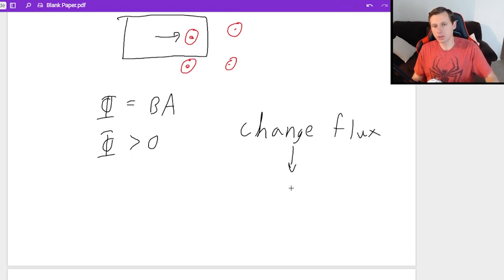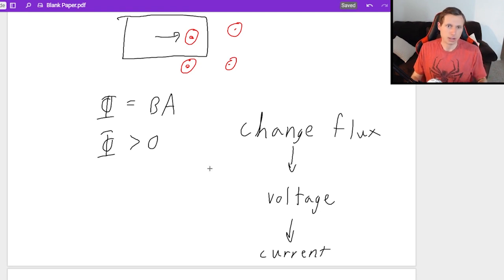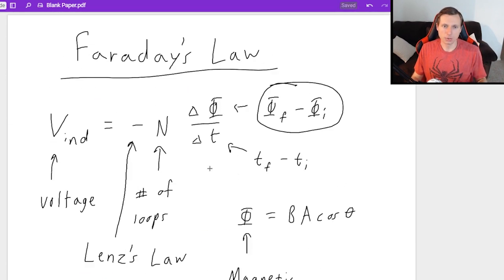So since you have a changing flux, that is going to create an induced voltage. And that is going to therefore create a current. And now if we want to find the direction of the current, we need to use Lenz's law. Okay, so let me scroll up back to Faraday's law equation. As I mentioned at the very beginning, this negative sign right here I said was Lenz's law. What the heck did that mean?